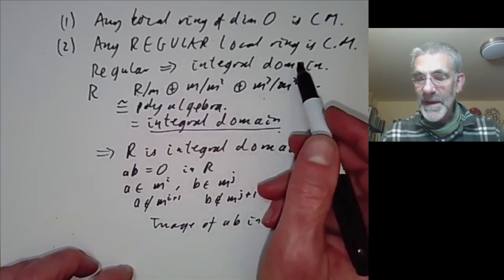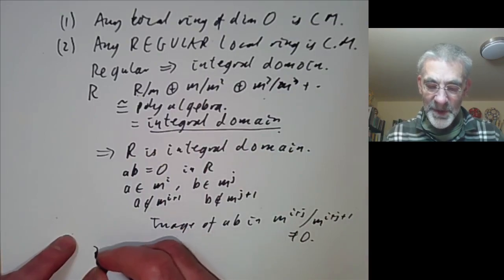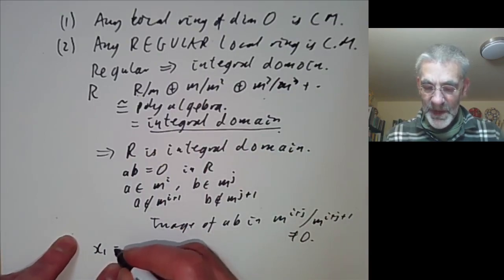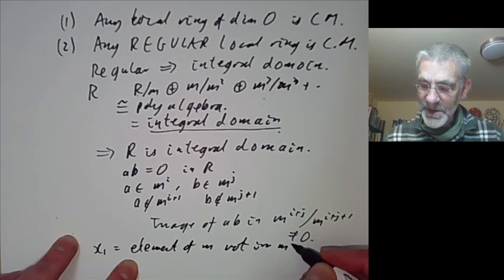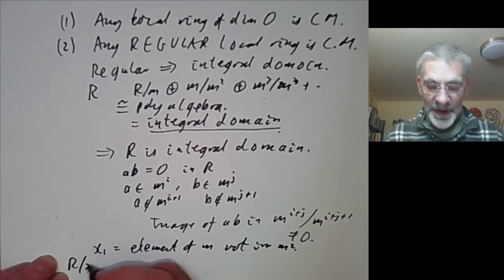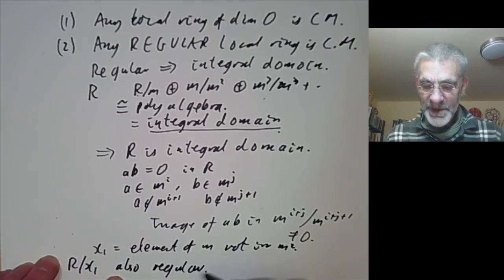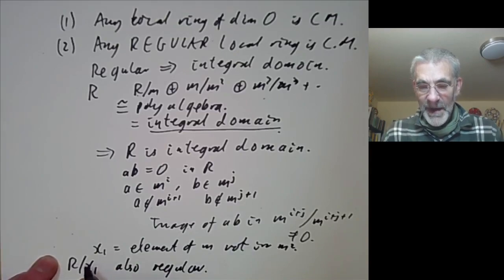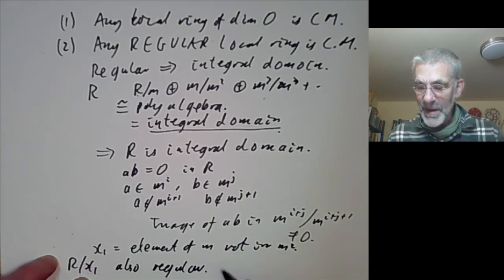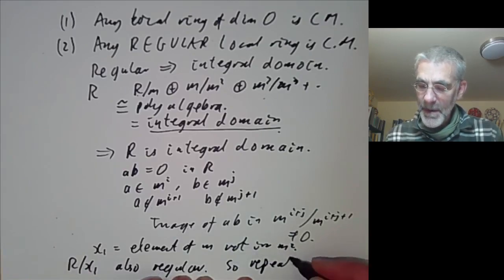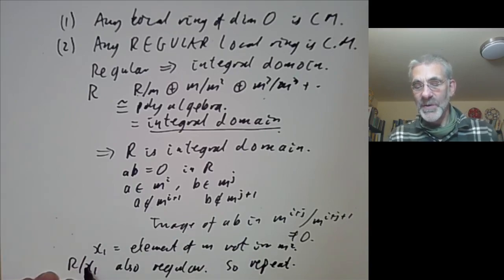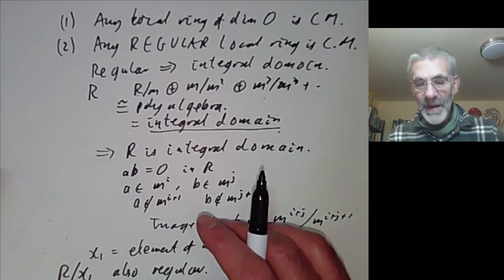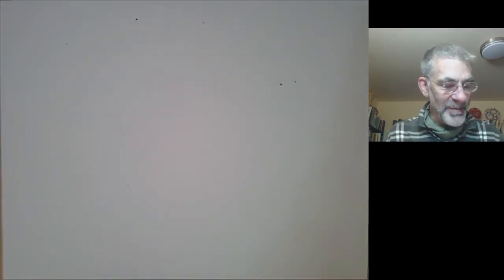So regular local rings are integral domains. Now we can easily prove the ring is Cohen-Macaulay: we pick x₁ to be some element of M not in M². Then R/(x₁) is also regular, because quotienting out by x₁ drops both the dimension and the dimension of the cotangent space by one. We can just repeat, and at each step any non-zero element will do since regular rings are integral domains. So regular implies Cohen-Macaulay.